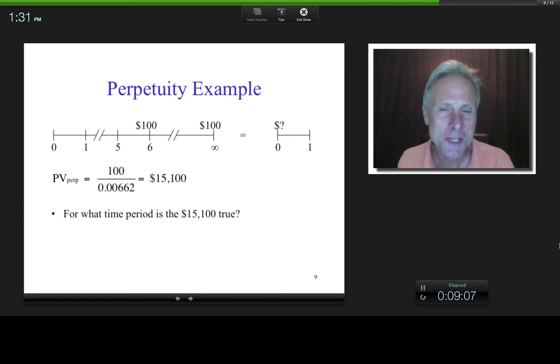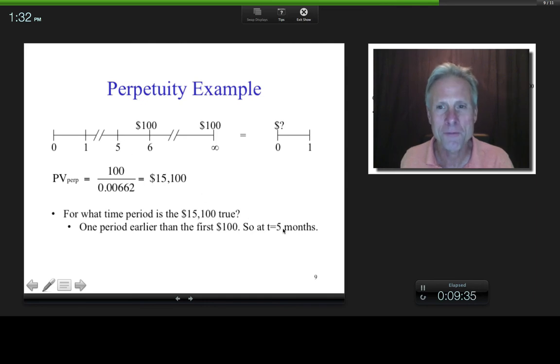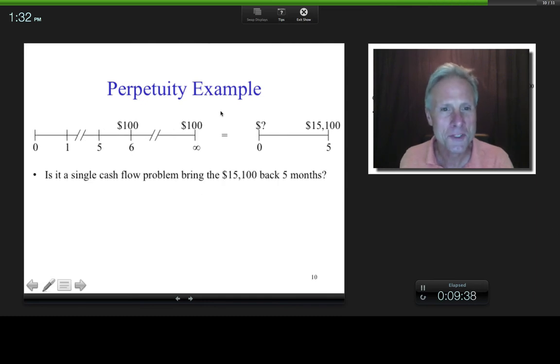And now this is really going to test your understanding of the derivation of this problem. So for what time period is this $15,100 true? If the first 100 happens at time period 6, the solution when you apply this present value of a perpetuity formula is one period earlier. It's one period earlier, right? So this is true for time 5 months. So if we look at this, what it means is that all of these cash flows going on forever starting at time 6 is equivalent to $15,100 at time 5.